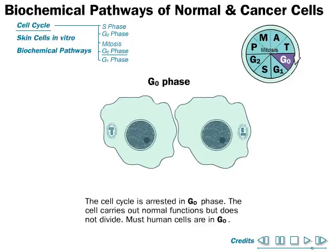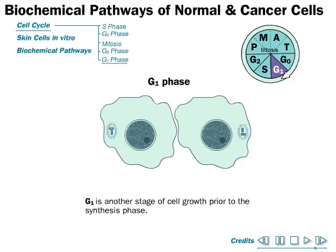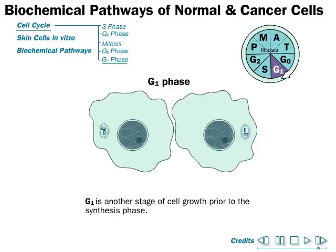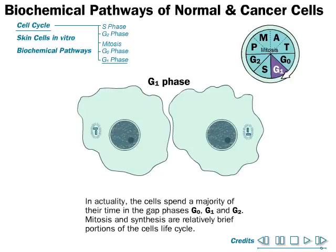These cells are then arrested in G0 phase, where the cell carries out normal functions but does not divide. Most human cells spend most of their time in G0. The G1 phase is another stage of cell growth prior to the synthesis phase, involving cytoplasm and organelle development. Cells spend the majority of their time in gap phases like G0, G1, and G2; mitosis and synthesis are relatively brief portions of the cell life cycle.